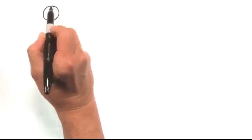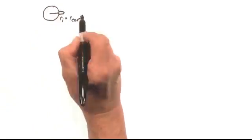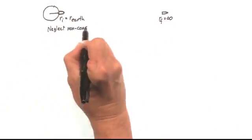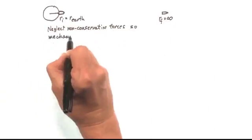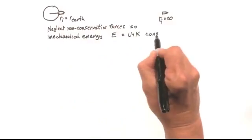Initial separation is one Earth radius. Final separation is very large. In space, there's no air resistance or friction, so let's neglect those losses, and mechanical energy is conserved.